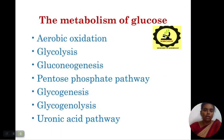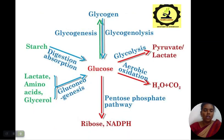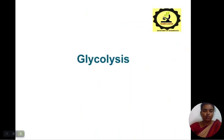The metabolism of glucose includes aerobic oxidation, glycolysis, glycogenesis, pentose phosphate pathway, glycogenolysis, gluconeogenesis, and the uronic acid pathway. This is the overall view of glucose metabolism.